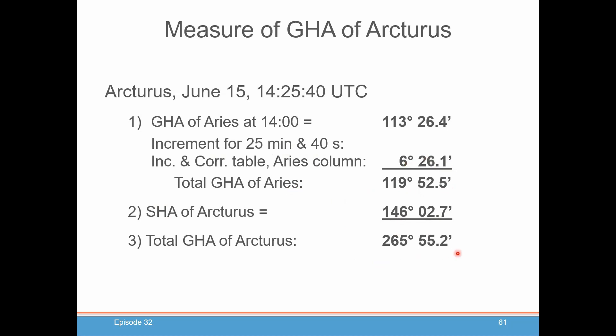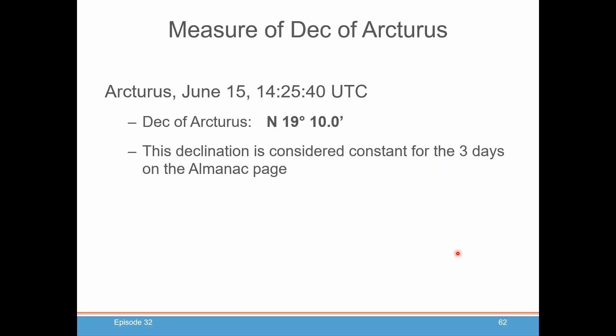Pretty simple and straightforward. You do that for any star, not just Arcturus — the same procedure. Declination is exactly what's in that table; there are no adjustments, no fiddling with it, no interpolation. The declination of Arcturus is fairly constant, at least for the three days that you'll see on the Almanac page.